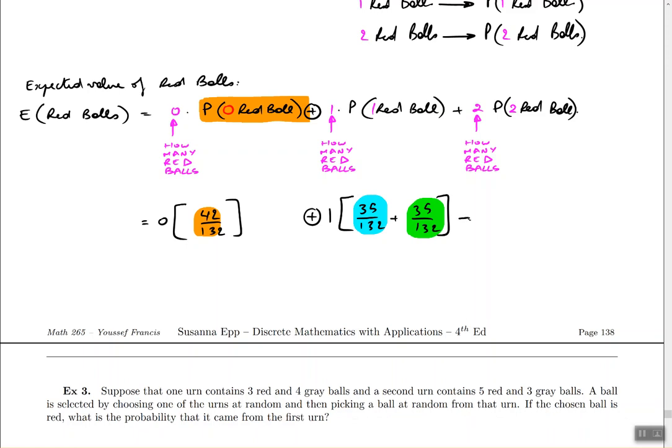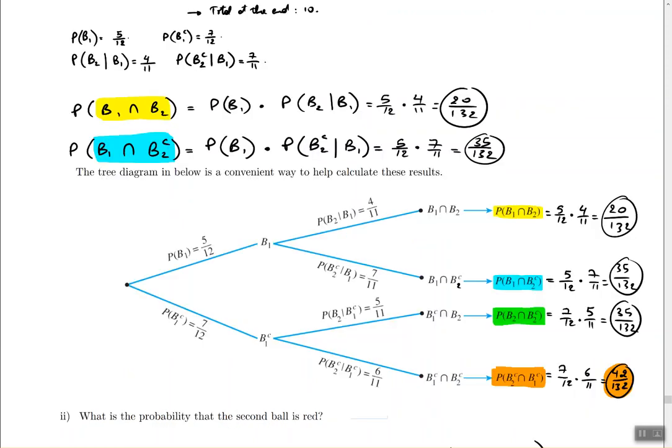Finally, for the last term, we have two times the probability of getting two red balls. This means that we got a red ball on the first try and a red ball on the second try. Again we can consult with our tree to figure out what that number is. In the tree that's the very first branch which says the probability is 20 over 132. That's b1 and b2, so that means we got a ball one that was red and a ball two that was red. So 20 divided by 132.